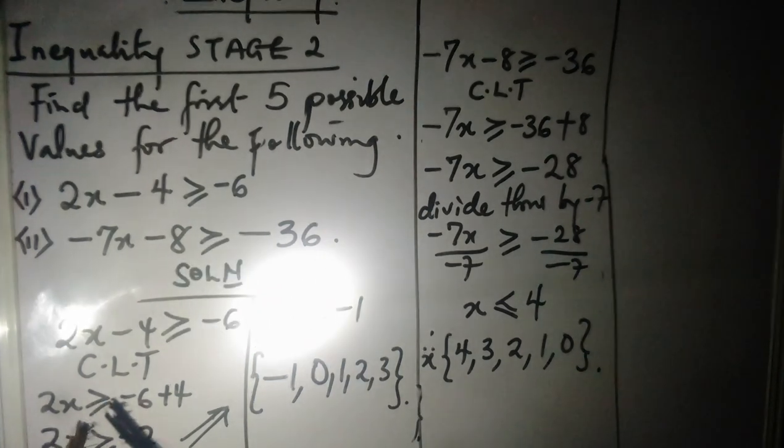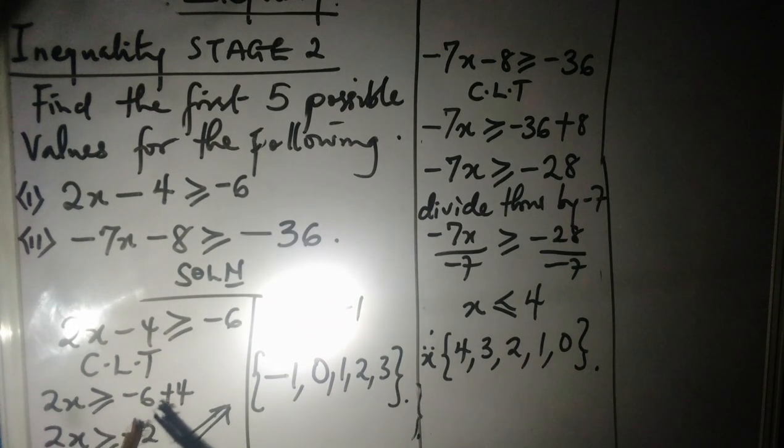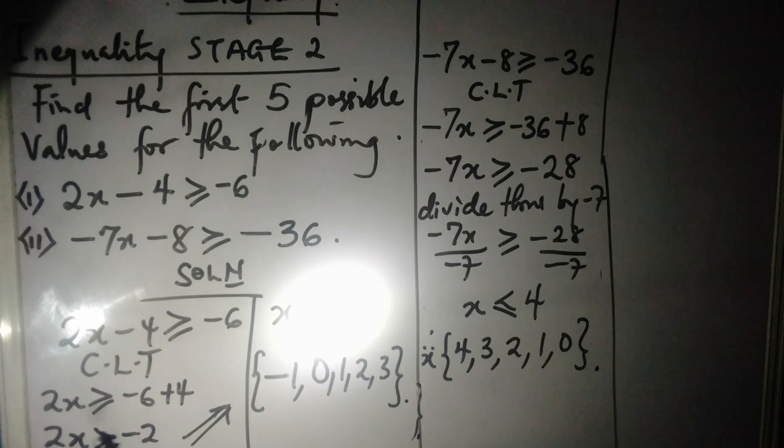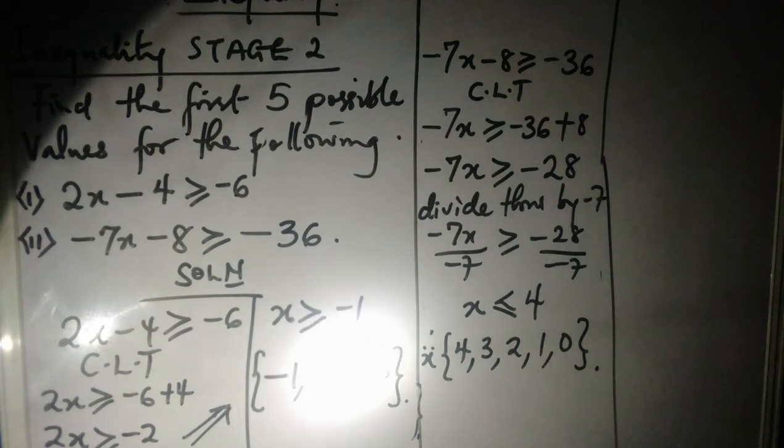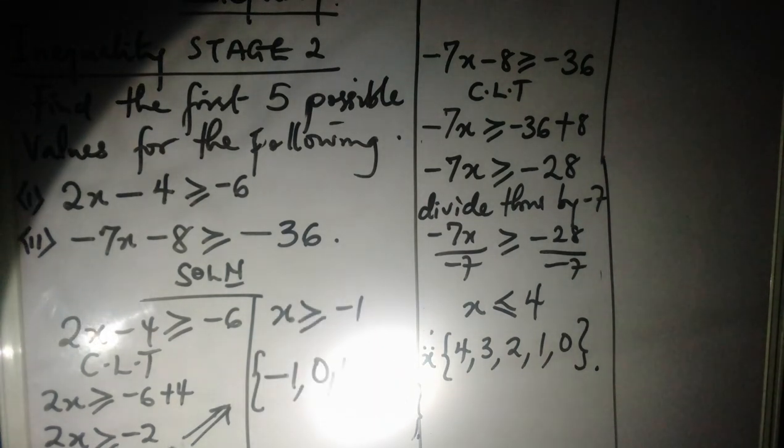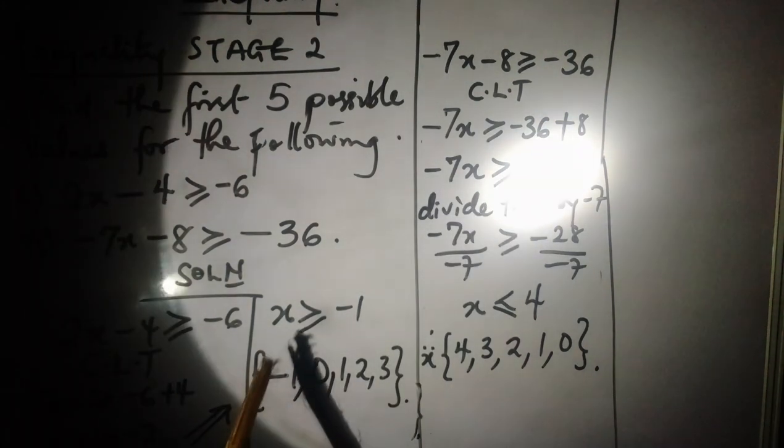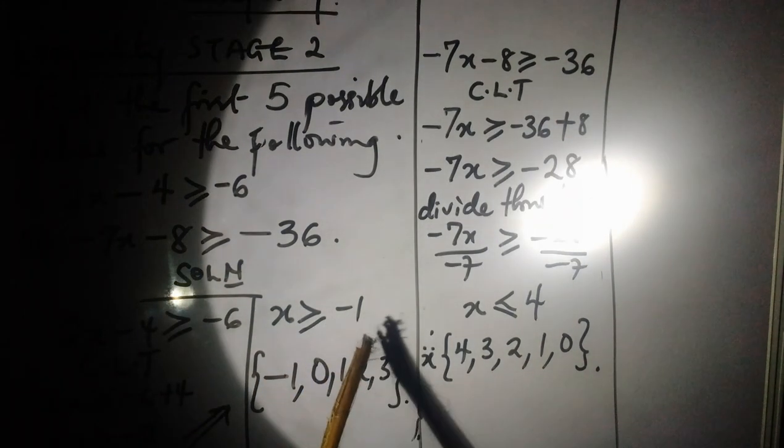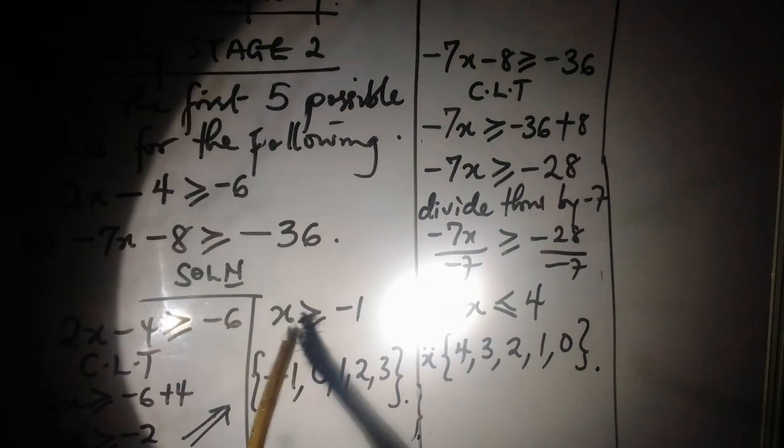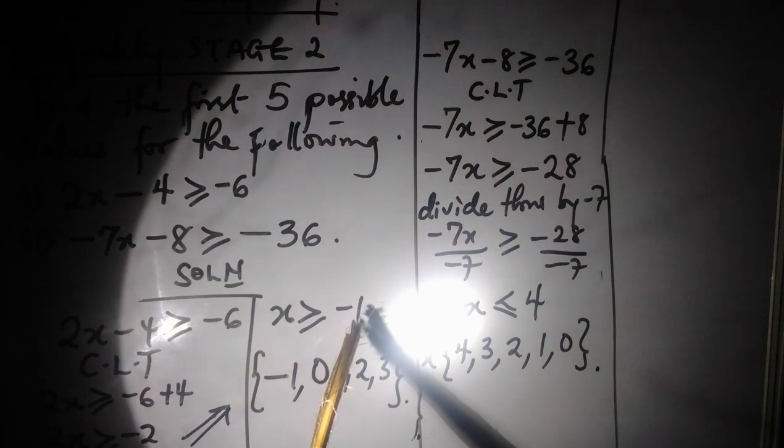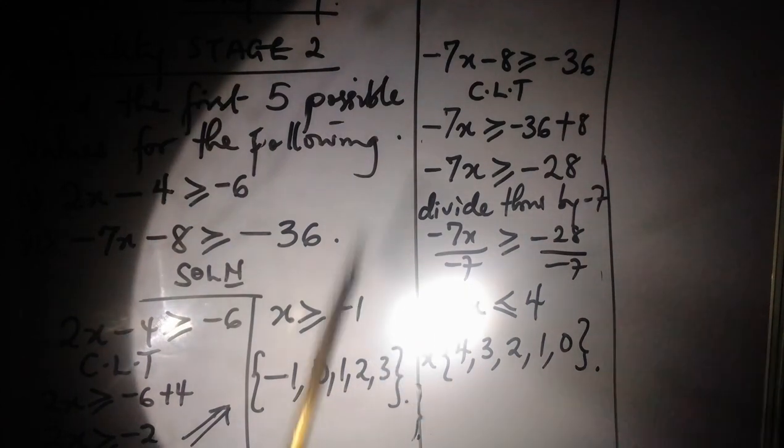2x is greater than or equal to -6 plus 4. So that gives us 2x greater than or equal to -2. Divide through by 2, you get x greater than or equal to -1. The values of x are greater than or equal to -1.